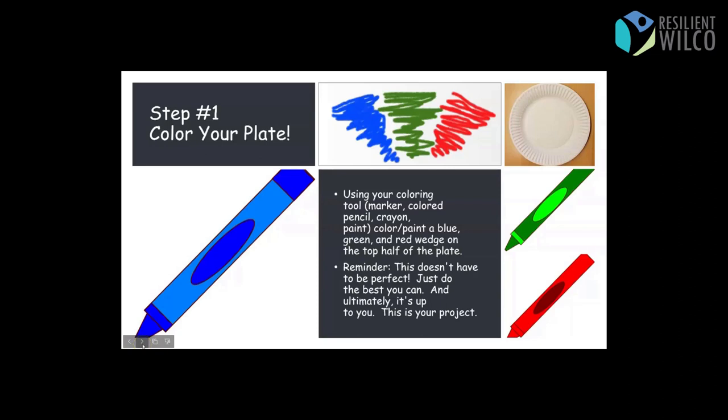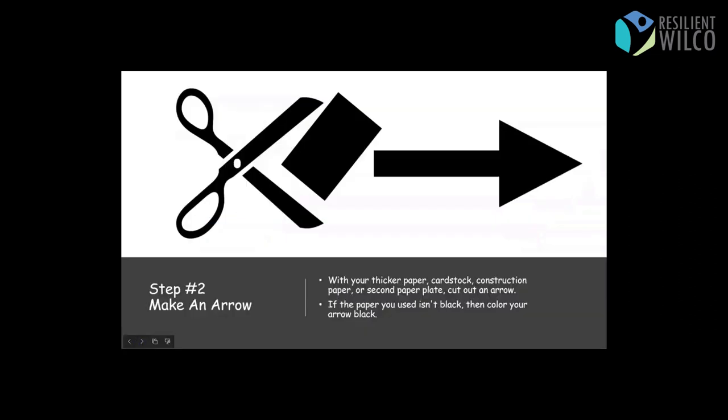Once your plate is colored, then you're going to make an arrow. So take your thicker piece of paper, your card stock, construction paper, second paper plate, whatever. And cut out an arrow. It's got to fit about half the size of the plate. So like a hand's length or four to five inches, something like that. And if the paper you used isn't black, then you can color your arrow black or leave it white. It doesn't really matter. But that is step two. So make an arrow.